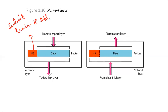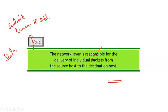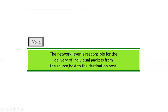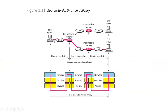The network layer adds its own header — containing the sender's and receiver's IP address — and gives the packet to the data link layer. On the receiver side, it takes the data from the data link layer, extracts the header, and passes the data to the transport layer. So the network layer is responsible for the delivery of individual packets from the source host to the destination host.